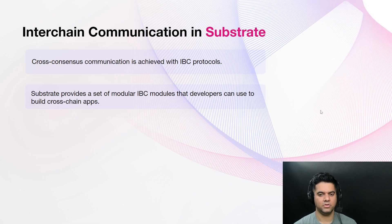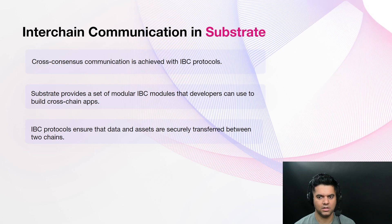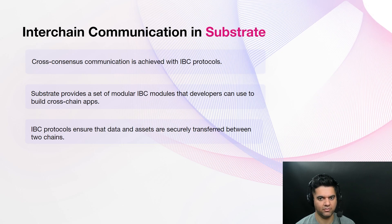For example, a substrate-based blockchain using proof-of-stake consensus can communicate with other substrate-based blockchains using proof-of-work consensus through the use of IBC. The IBC protocols ensure that the data and assets are securely transferred between the two chains, even though they have different consensus mechanisms. By enabling cross-consensus communication, substrate promotes greater interoperability between different substrate-based blockchain networks and helps to facilitate the growth and development of the overall blockchain ecosystem.